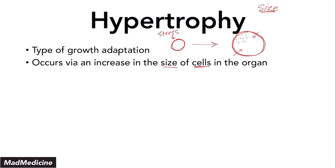Our bodies are really efficient, so empty cytoplasm doesn't happen. We are able to fill in this space. You're not going to have empty cytoplasm — instead you are going to have proteins and organelles. Under hypertrophy, not only does the size increase, but you also have more protein synthesis and an increase in organelles — organelle production as well. This is a key defining factor for hypertrophy.